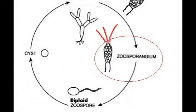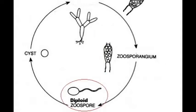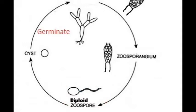When the zoospores are ready to be released, they exit through an opening in the zoosporangium. The zoospores are motile and able to seek out a suitable habitat; their motility is dependent on their flagellum. If the zoospore finds a suitable habitat, it begins to germinate and develop into a diploid chytrid.